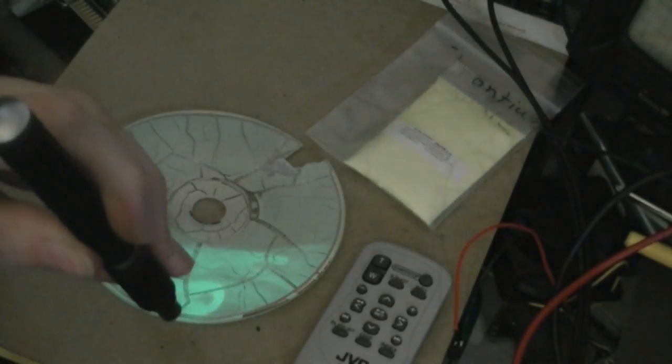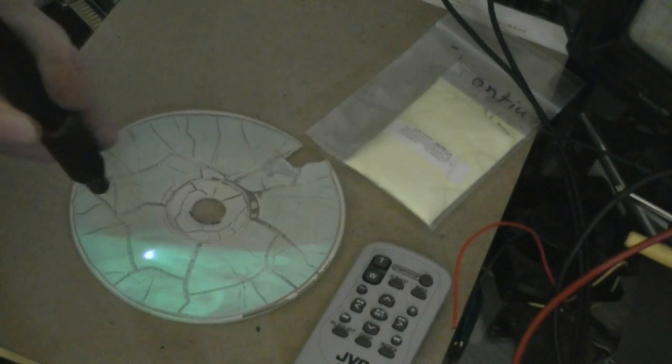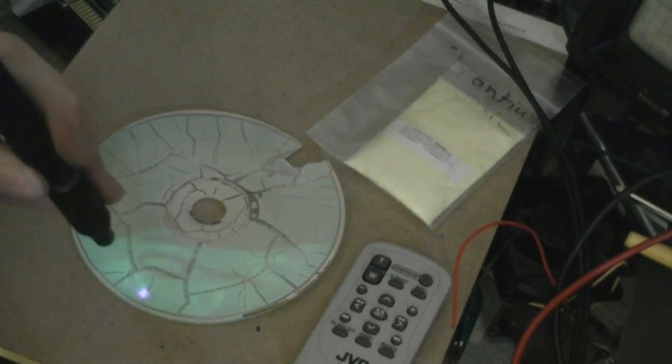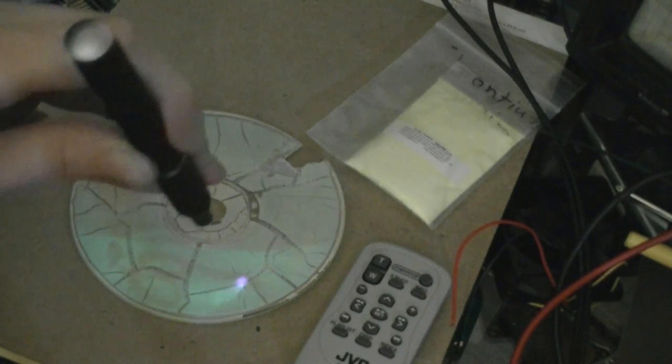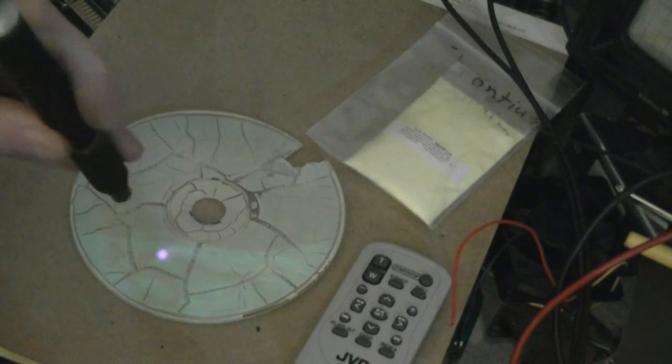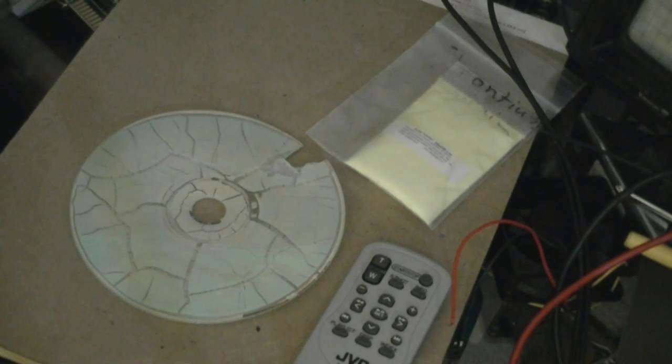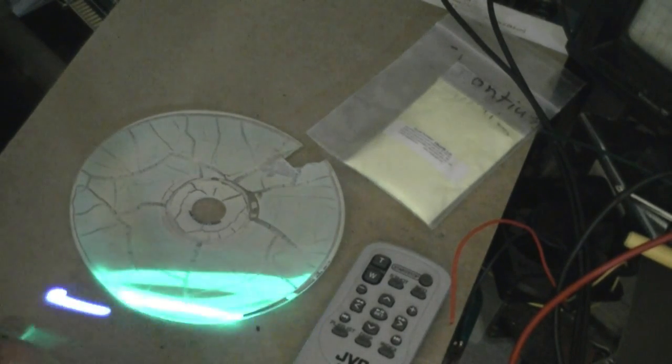In the video I'm demonstrating infrared quenching. On the CD I've sprayed a thick layer of glow-in-the-dark phosphors. I'm exciting the phosphors with a violet laser, and then I'm using an infrared laser to do the quenching. I also need to point out that my camera can see in the infrared range, that's why the IR laser looks purple.